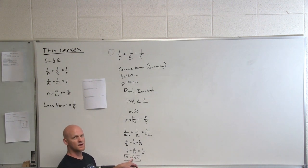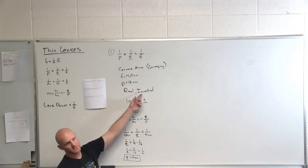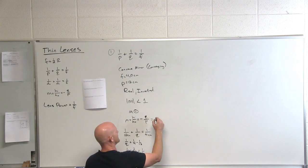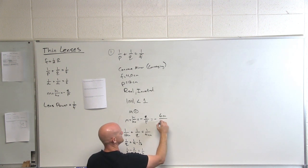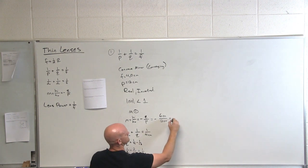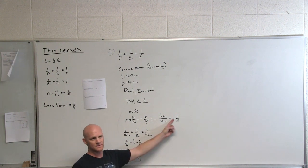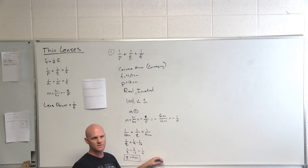With our image distance being positive 6 centimeters, that's a real image. And being real makes it inverted. Now for our magnification: negative 6 centimeters over 12 centimeters gives us negative one half. The negative part means it's inverted, and the absolute value being less than one means it's smaller — the image only appears to be half as big as the original object.